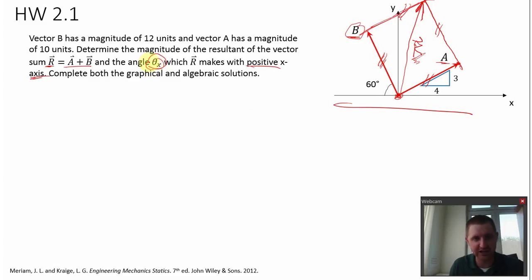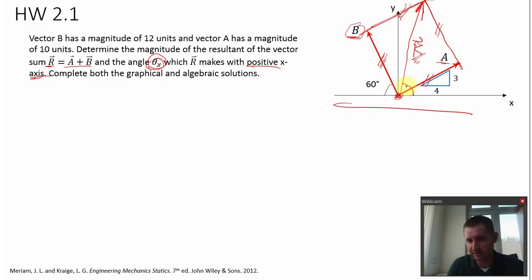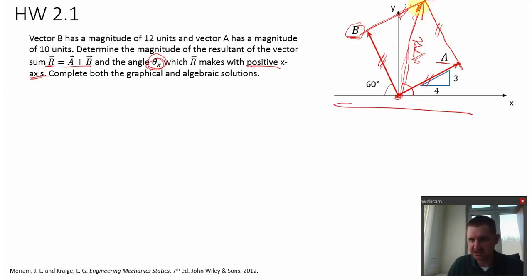The second part of the question asks for theta X — the angle that the resultant vector makes with the positive X axis. So that is this angle here. I can already get a guess: maybe it's going to be about 80 degrees. And also the length of this vector, which is the magnitude of the resultant — it's going to be greater than 12, obviously. Maybe 15, 16, 17 units long, something like that. So I've already got an idea of what the answer is going to be.